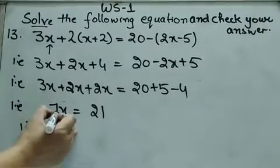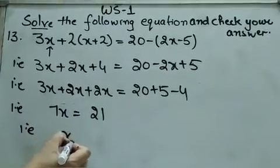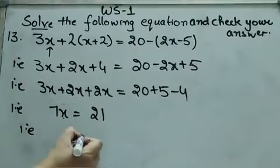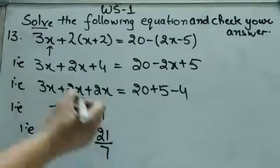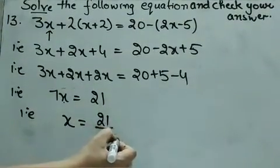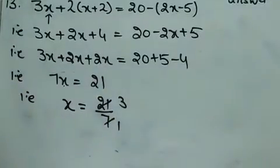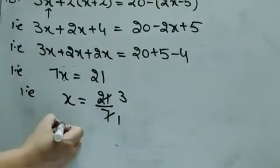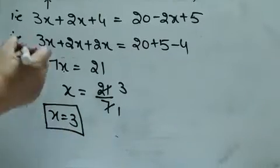So that is 7x = 21. मुझे x निकालना है — जो x के साथ multiplied है, transposing के बाद वो division में चला जाता है। Cancellation: 7 ones are 7, 7 threes are 21. So, we have x equal to 3.